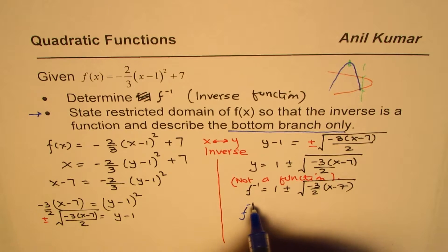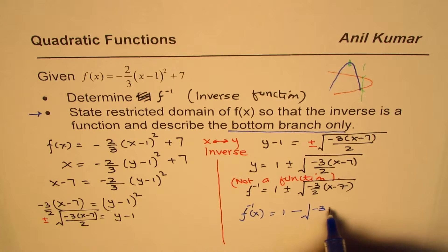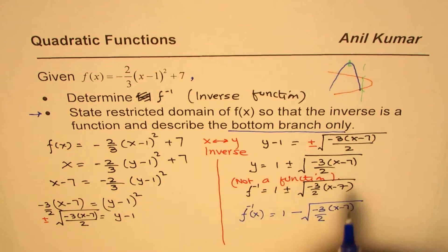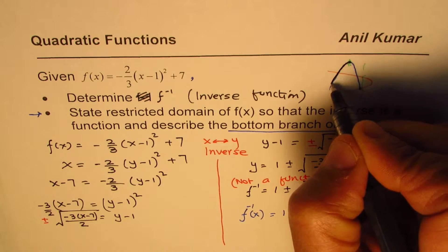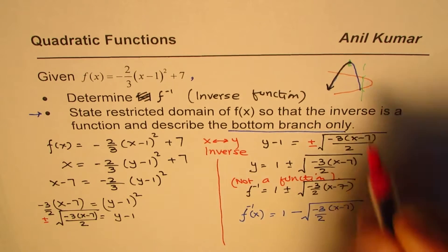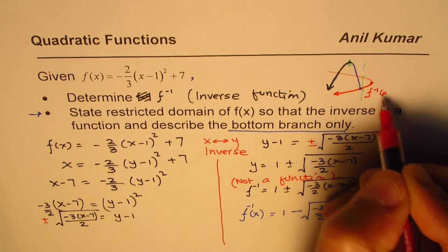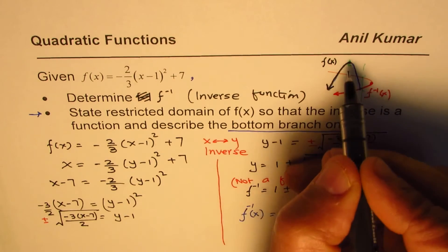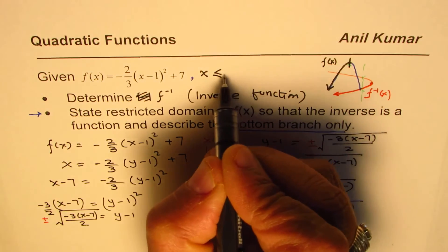The bottom branch corresponds to the minus part. To describe the bottom branch only, we write f⁻¹(x) = 1 - √(-3(x-7)/2). That is the inverse function we are describing. For the restriction, we consider only the left part of the parabola from the vertex. The vertex x-coordinate is 1, so we restrict to x ≤ 1. With this restricted domain, our inverse function will be this lower half.